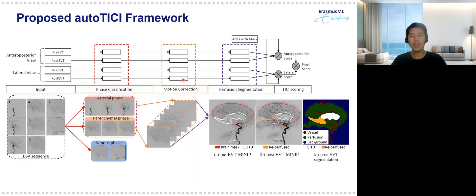To overcome these limitations, we propose a fully automatic and quantitative reperfusion scoring framework called AutoTK. For each patient, we take four acquisitions as input: the AP and lateral views of pre- and post-EVT acquisitions.